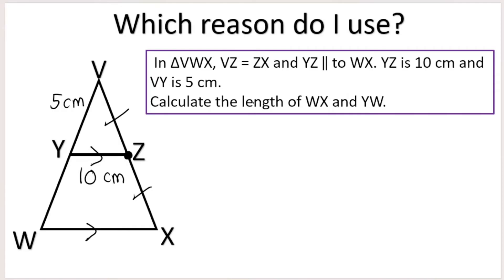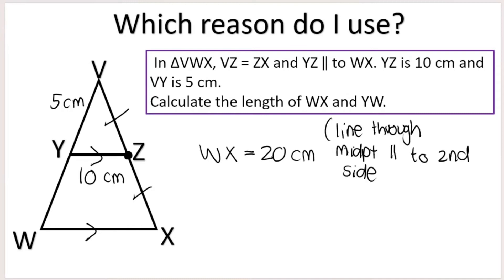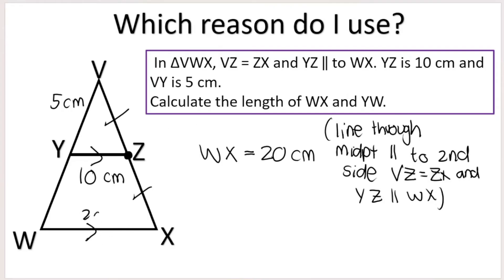They want us to calculate the length of WX. WX is the bottom line, and because of the theorem 'line through midpoint parallel to second side', WX will be twice the length of YZ, so WX equals 20 centimeters. My reason for that is line through midpoint parallel to second side. The given information that allows this conclusion is: VZ equals ZX and YZ is parallel to WX — that's how I know to use line through midpoint parallel to second side.